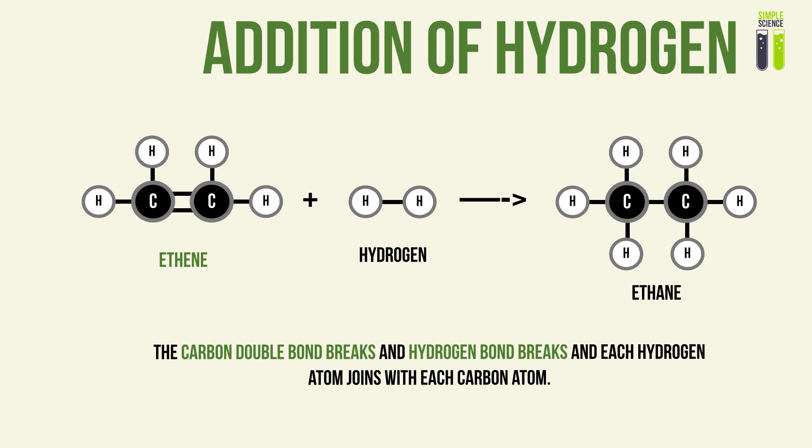In hydrogenation, the carbon double bond breaks and the hydrogen-hydrogen bond also breaks. Each hydrogen atom joins with each carbon atom, forming one molecule. When an alkene breaks its carbon double bond and joins with two hydrogen atoms, it forms an alkane. This is an example of hydrogenation.